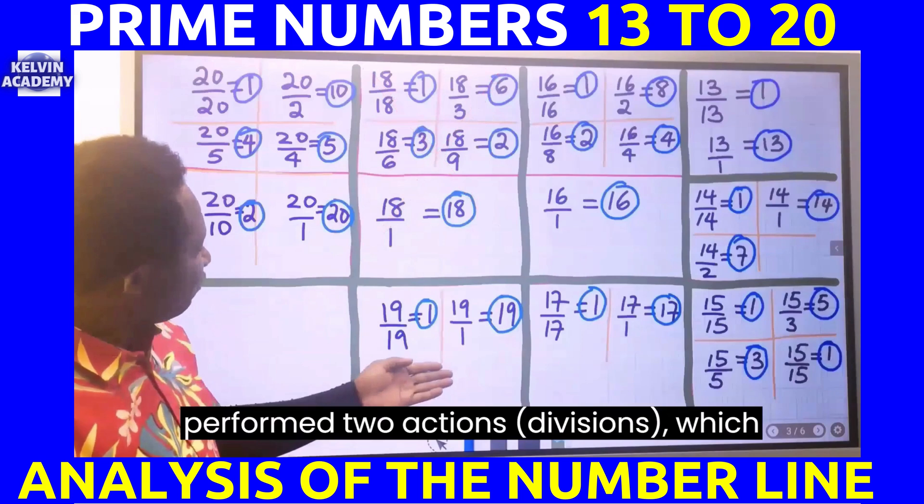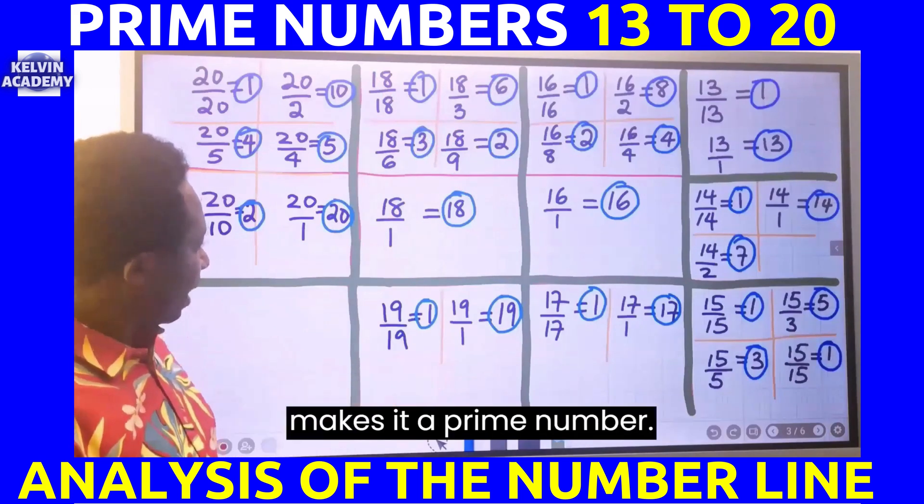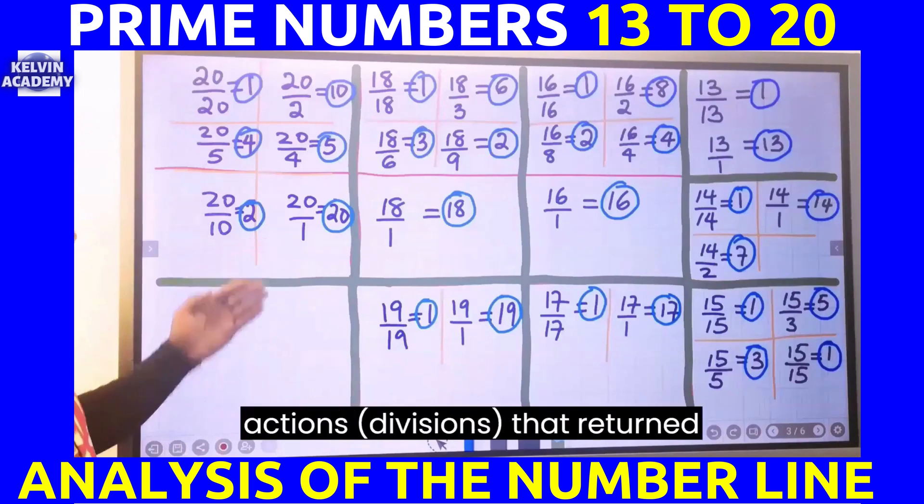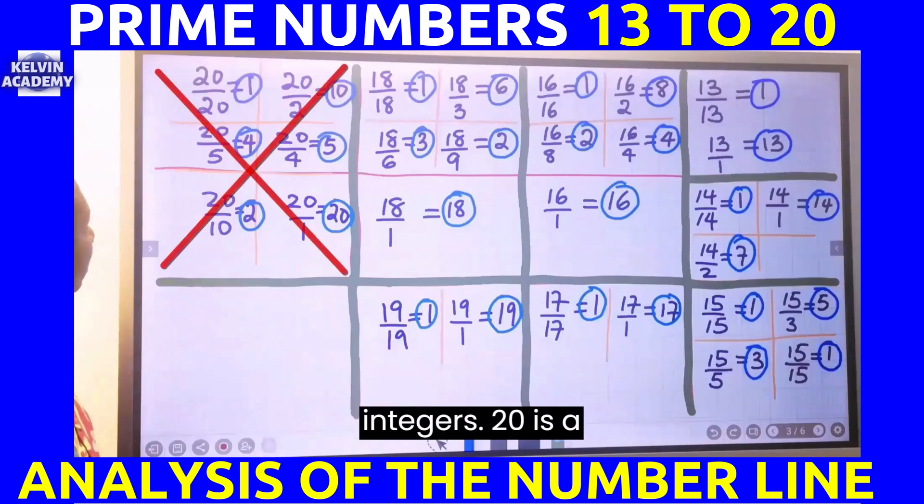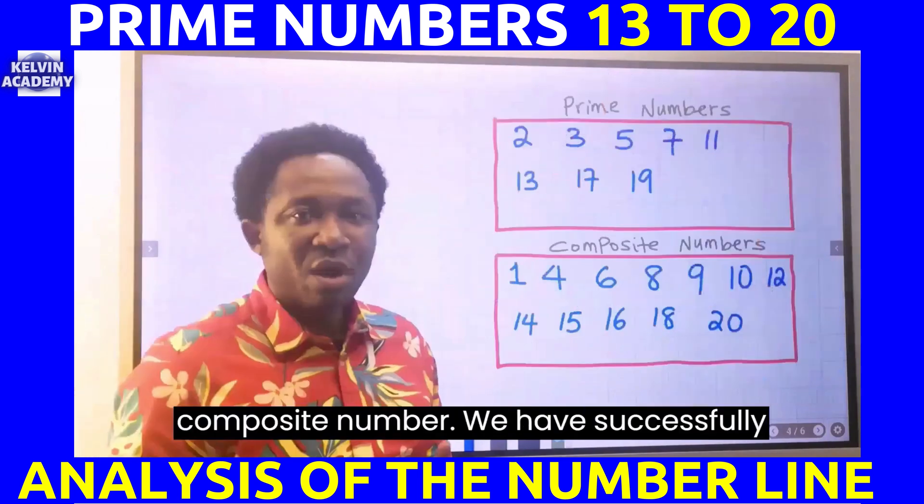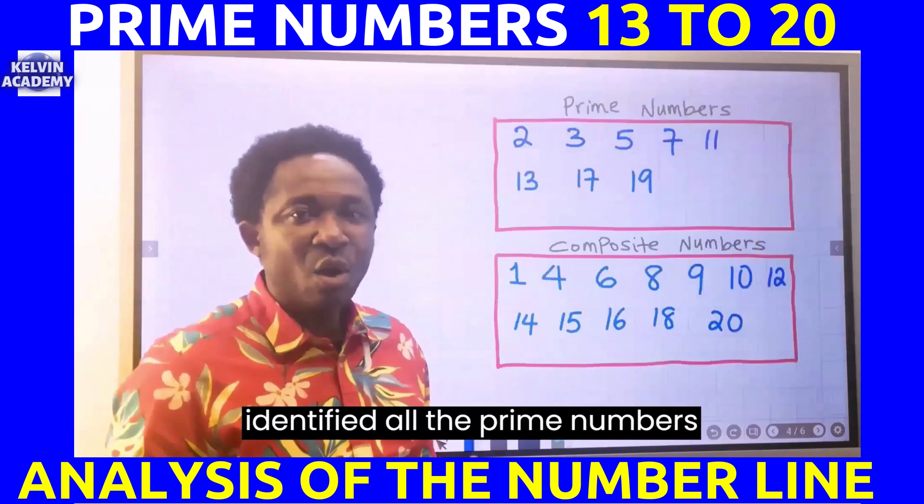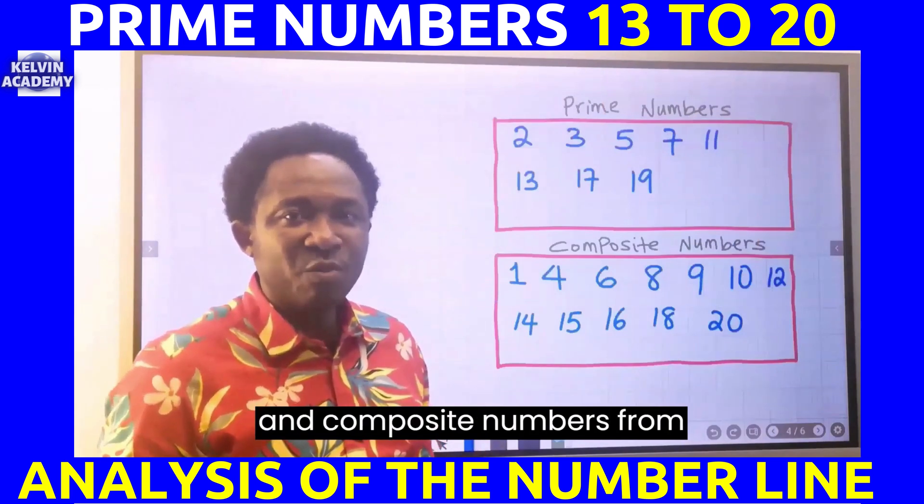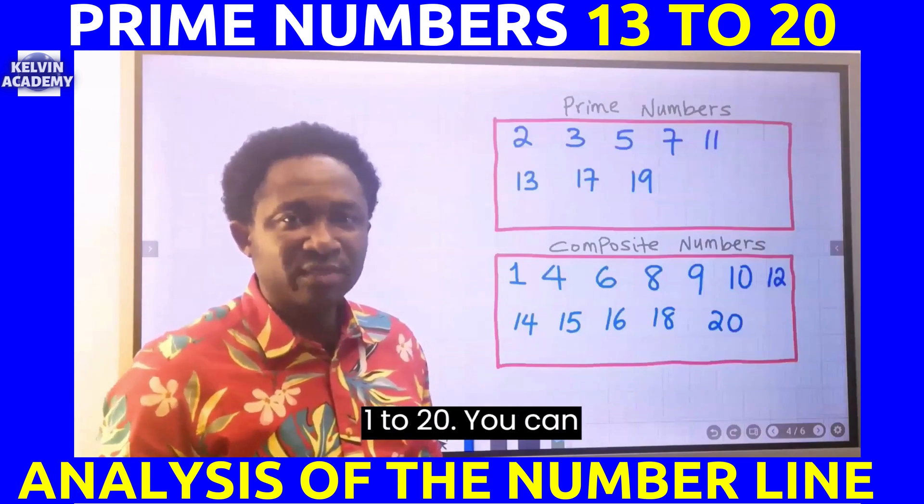19 performed two actions which makes it a prime number. 20 here performed six actions that returned integers, so 20 is a composite number. We have successfully identified all the prime numbers and composite numbers from 1 to 20.